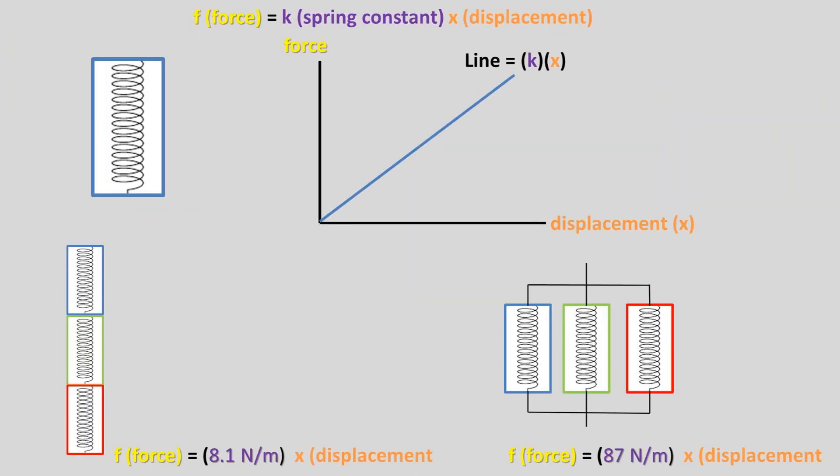Now we can use these equivalent spring constant values in the k times x equation to find the force from elongating or compressing a spring system. For the parallel spring system, this is assuming that the fixture is in place that can make all springs elongate or compress at the same rate, same value for the x displacement.